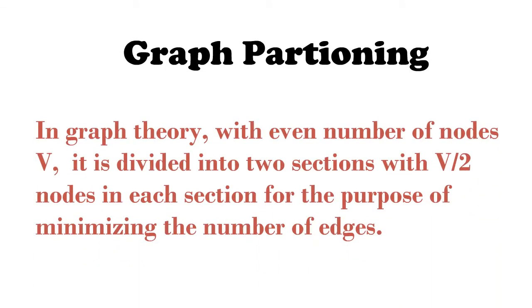In graph theory, with even number of nodes V, it is divided into two sections with V by two nodes in each section for the purpose of minimizing the number of edges.